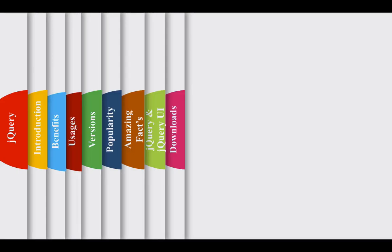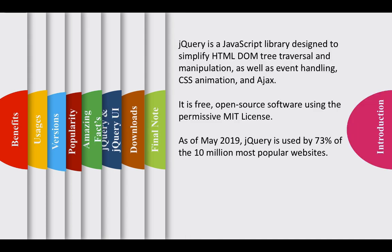Welcome to the jQuery lecture series. Let's start with the introduction. jQuery is a JavaScript library designed to simplify HTML DOM tree traversal and manipulation, as well as event handling, CSS animations and Ajax. It is free open source software using the permissive MIT license. Remember that jQuery itself is not a language — it's a JavaScript library.